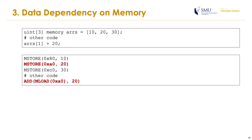Given the source code in the slide, it creates an array with three values — 10, 20, and 30 — in memory. The last line loads data at index 1 and adds it to 20. There is clearly a data dependency from array[1] to its declaration. At the bytecode level, the MLOAD instruction loads data from memory address A0 written by the second MSTORE instruction. Therefore, we can easily detect data dependencies between them.